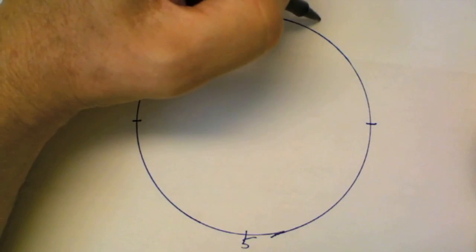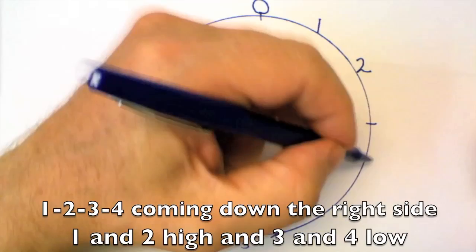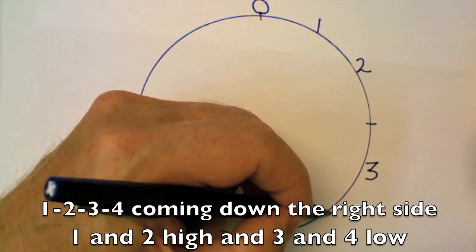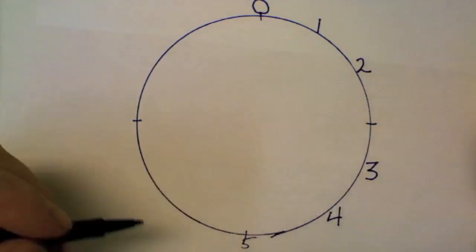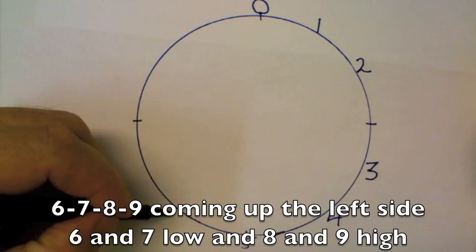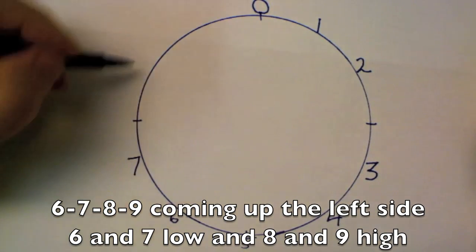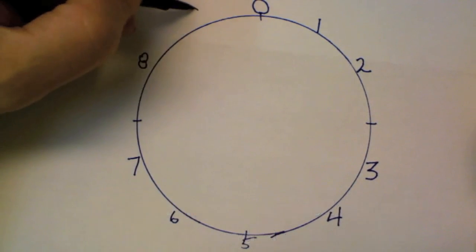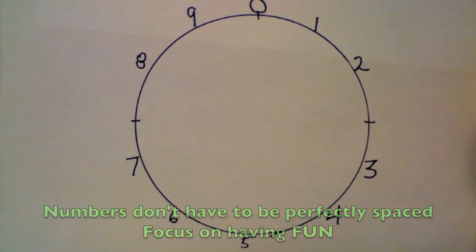So one, two, three, and four on the right side, and we have five down here. Then we have six and seven and eight and nine, and we're back to zero. We've created our number circle.